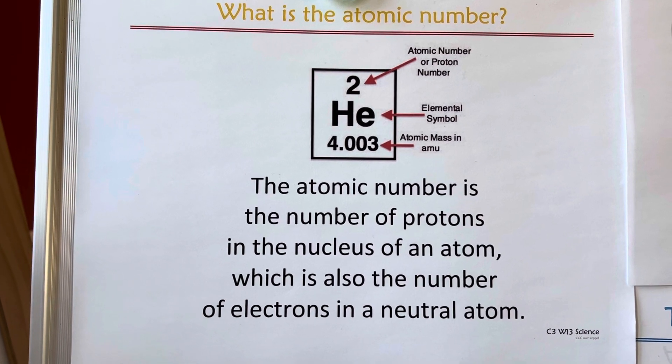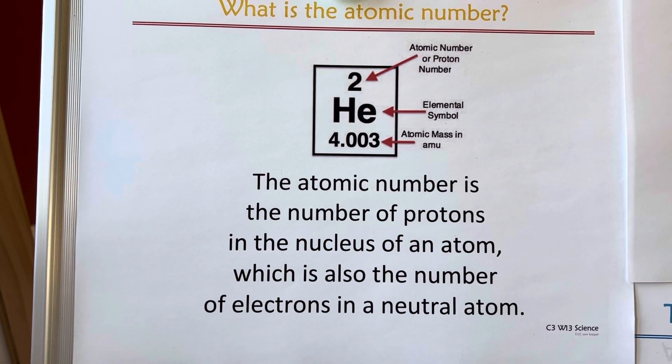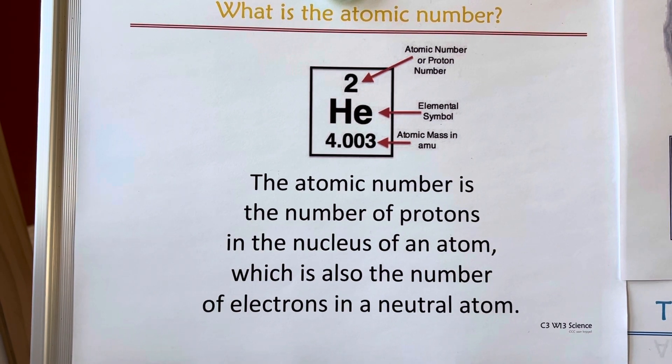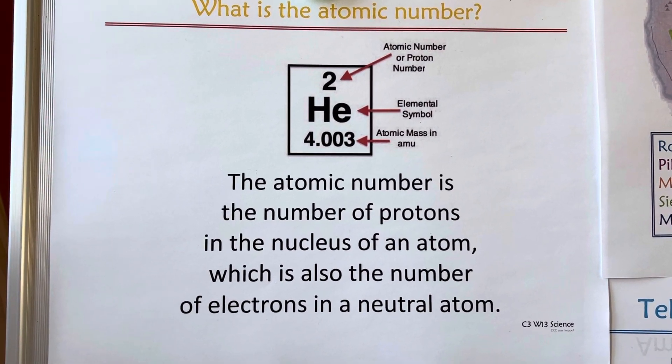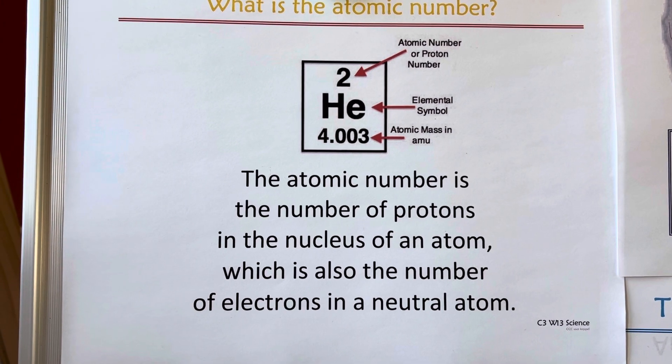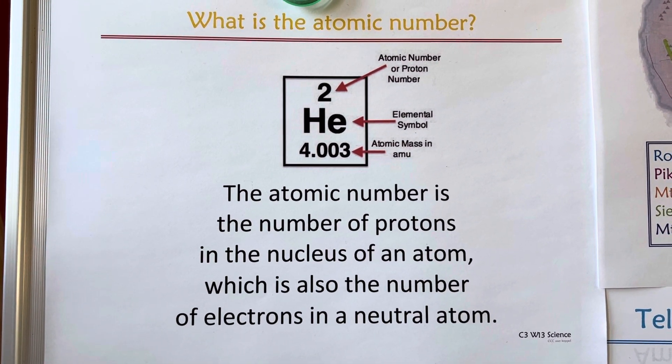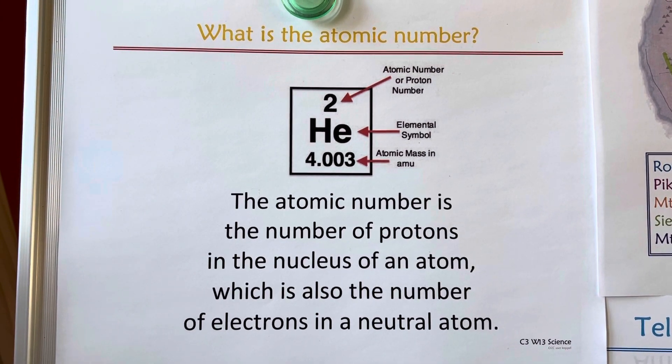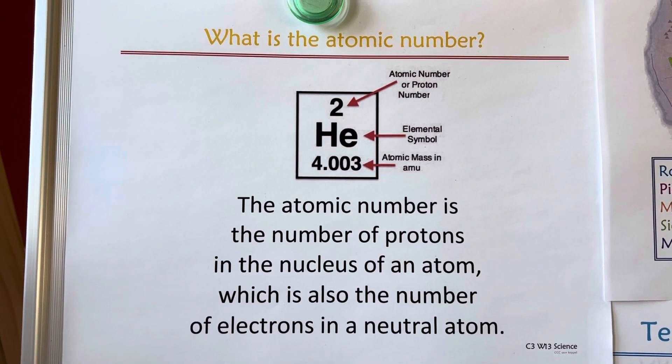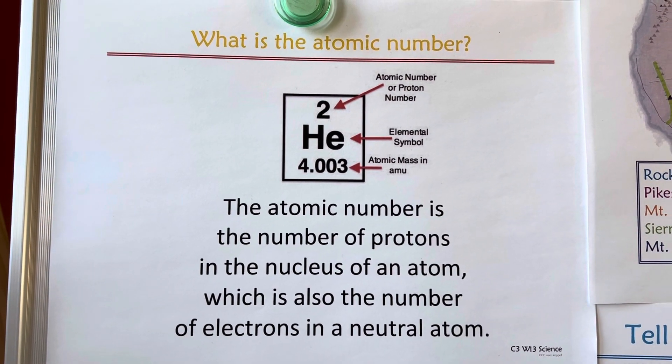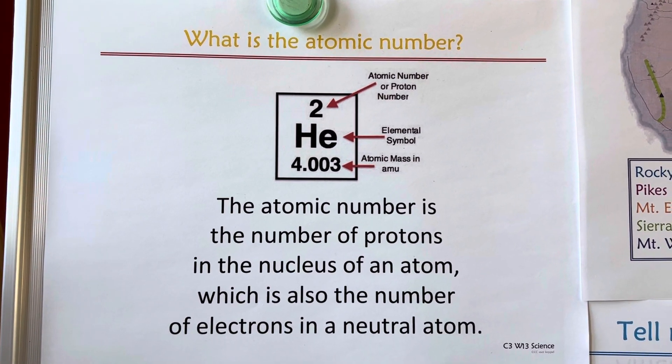The atomic number is the number of protons in the nucleus of an atom, which is also the number of electrons in a neutral atom.